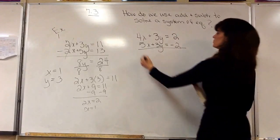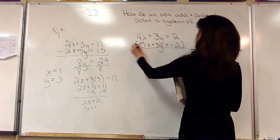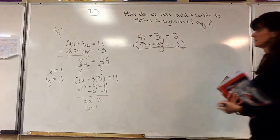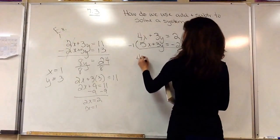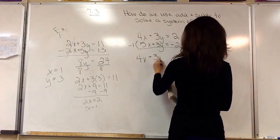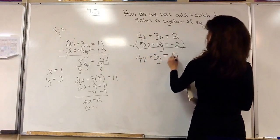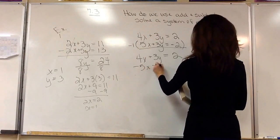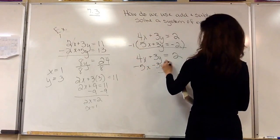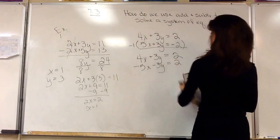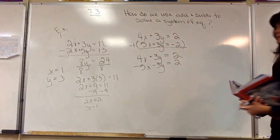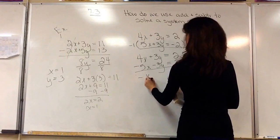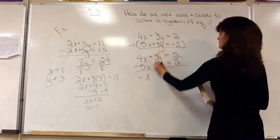So it would cancel and then I can solve for x just like I solved for y over here. So what I'm simply going to do is I'm going to multiply everything in this bottom equation by negative 1. So that will make it 4x plus 3y equals 2 and negative 5x, negative 3y equals positive 2. That simple.